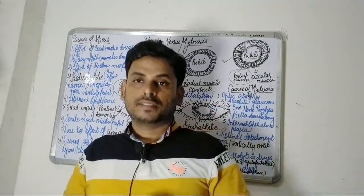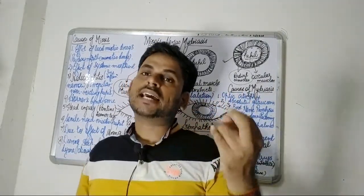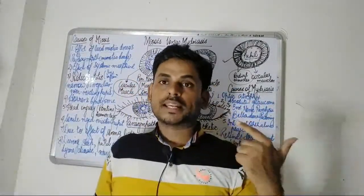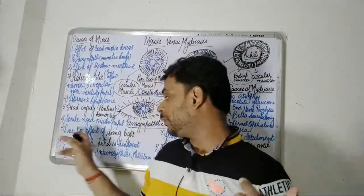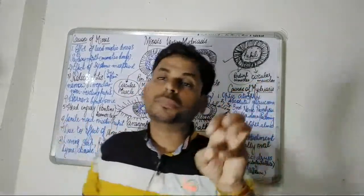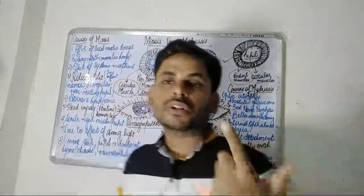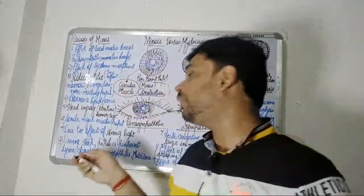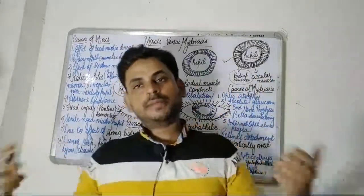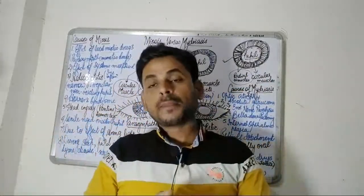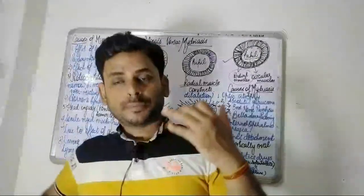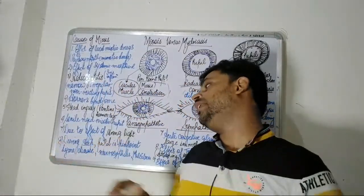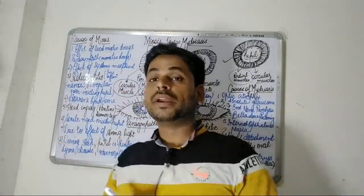Another cause of miosis is the effect of strong light — the pupil regulates the amount of light entering the eye, so during very strong light the size of the pupil diminishes. Additionally, during sleep, which is a parasympathetic process where the body is fully relaxed, the pupil is pinpoint.